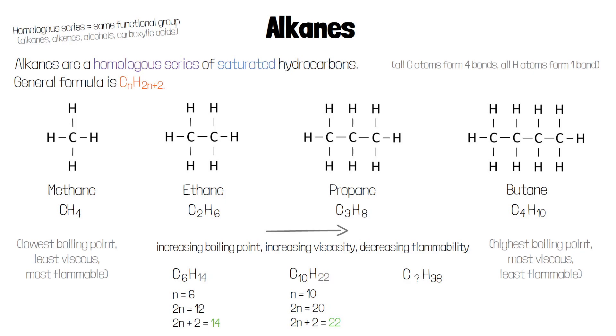If an alkane has 38 hydrogen atoms, then 2N+2 must be equal to 38. That means 2N is 2 less than that, which is 36.